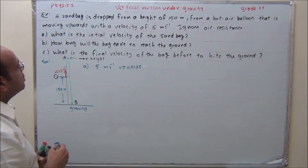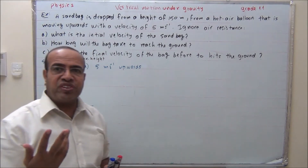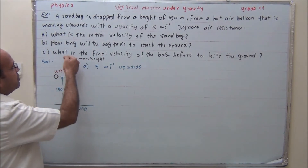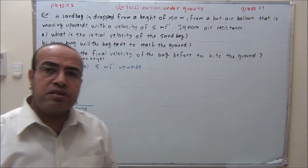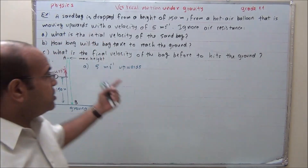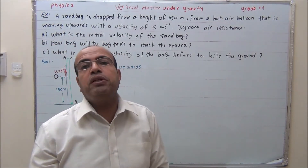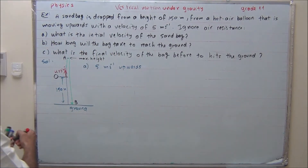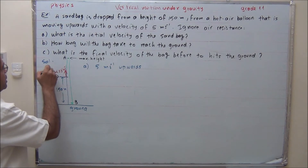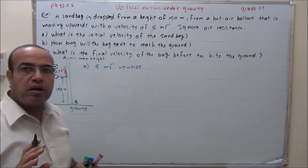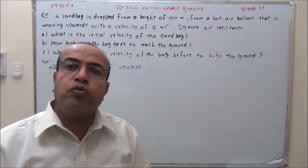How long will the sandbag take to reach the ground? We have two time intervals: the time from start to maximum height, and the time from maximum height to ground. This part involves vectors — the initial velocity and final velocity are all vectors, so we need to assign directions. We take the direction of the starting upward motion as positive, so the acceleration due to gravity will be negative.